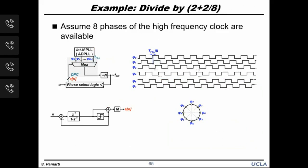Here is an example: division by 2 plus 2/8. Assume M=8 phases from a high-frequency PLL (e.g., an all-digital PLL): phi_0, phi_1, ... phi_7, nominally equally spaced (0°, 45°, 90°, 135°, etc.). A multiplexer selects one of these eight phases, and we count N cycles of the chosen phase to generate an output rising edge. If the mux always chooses the same phase, the structure simply divides by N. Instead, the mux changes its choice according to a sequence E[n] generated by a phase-select logic block — essentially a flying adder that digitally accumulates alpha, wrapped around when the sum crosses unity.